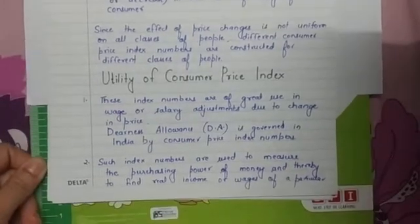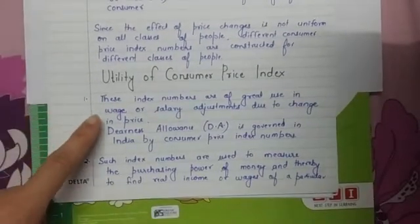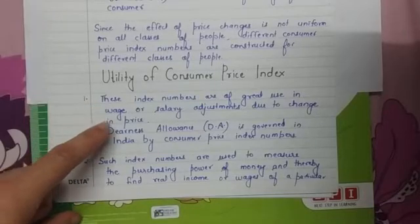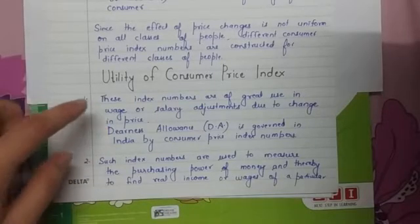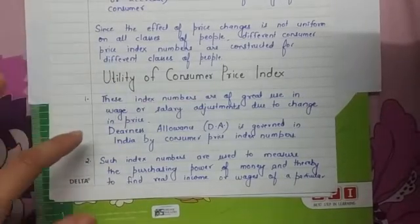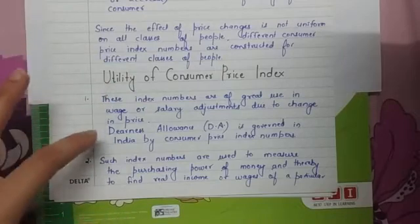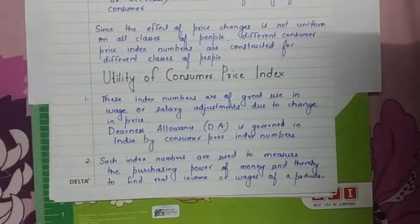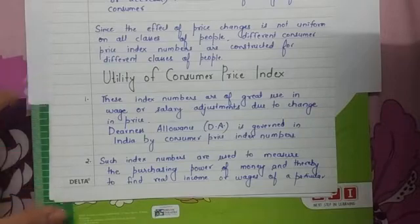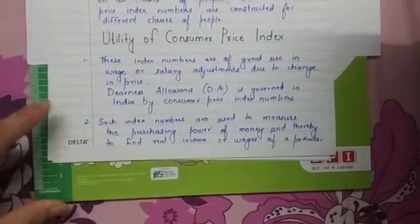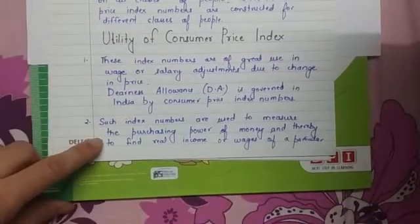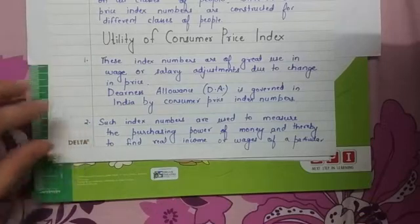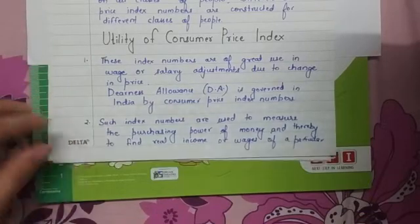The utility of the consumer price index: these index numbers are of great use in wage or salary adjustment due to change in price. When we calculate CPI, the government will decide how much dearness allowance to increase in a particular salary. Such index numbers are used to measure the purchasing power of money and thereby find the real income or real wages of a particular group of people.